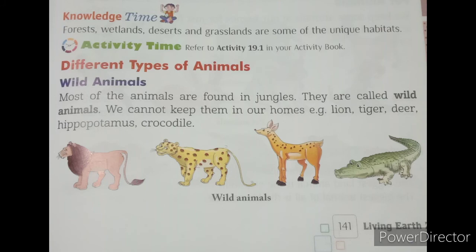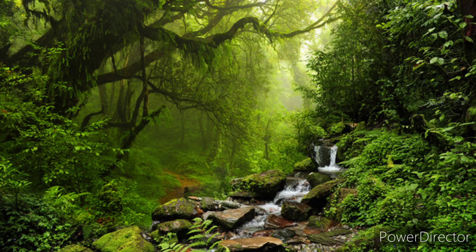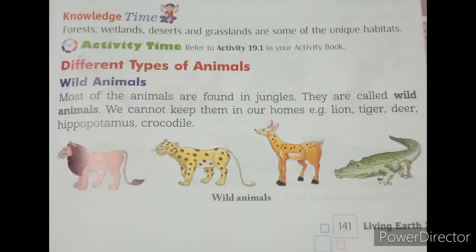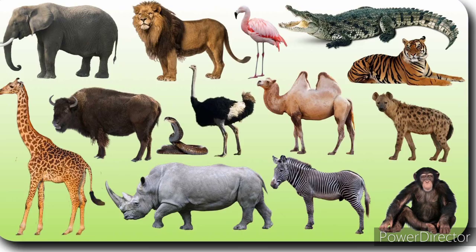Different types of animals. Wild animals: most of the animals are found in jungles. They are called wild animals. We cannot keep them in our homes. Examples: lion, tiger, deer, hippopotamus, crocodile.